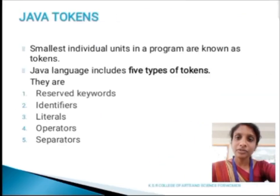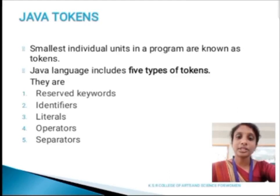Next, we are going to discuss about Java tokens. Tokens are nothing but the smallest individual unit in a program, known as tokens. Tokens are classified into five types. They are keywords, identifiers, literals, operators and separators.